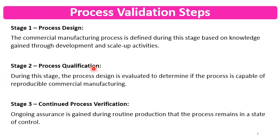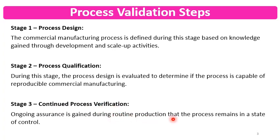Then comes Process Qualification. Now you have a designed process in hand and it is required to be qualified. During this stage, the process design is evaluated to determine if the process is capable of reproducible commercial manufacturing — so that designed process should be reproducible. Then it moves to the third stage, Continued Process Verification.